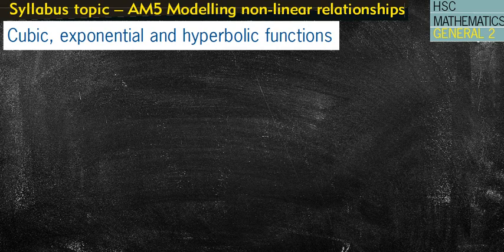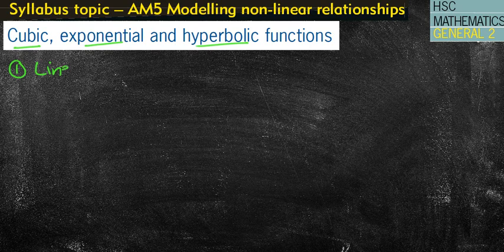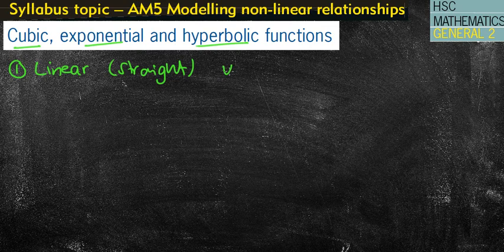Hey guys, welcome to today's lesson looking at Cubic, Exponential and Hyperbolic Graphs. This is the second installment of the Non-Linear Relationships from the General 2 course. We've already looked at our linear graphs, which are straight lines in the form of y equals mx plus b, where it is linear because x is to the power of one — that's what makes it a linear graph.